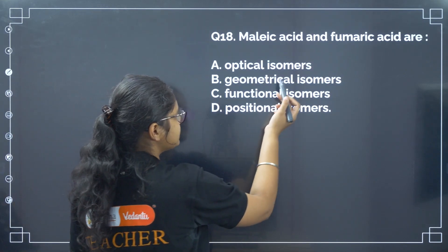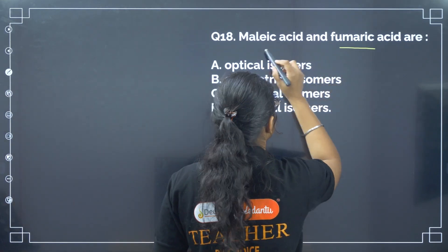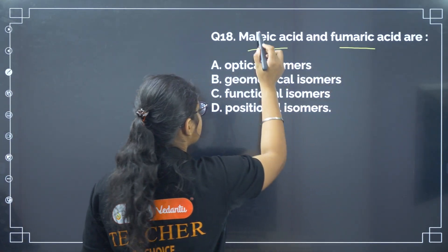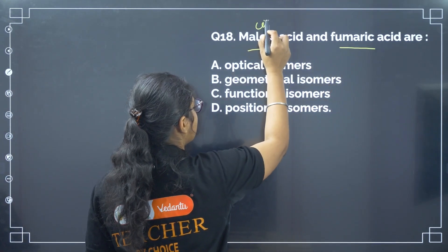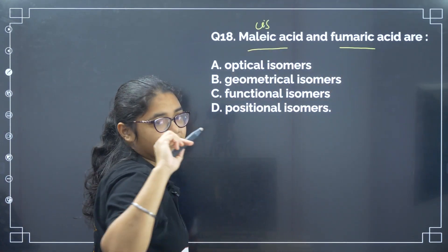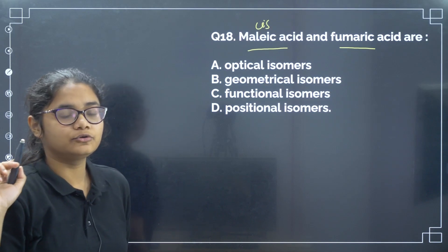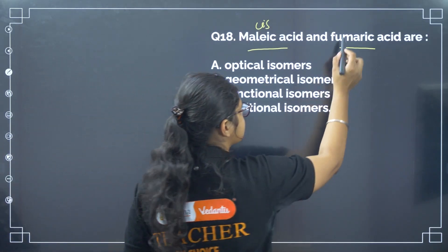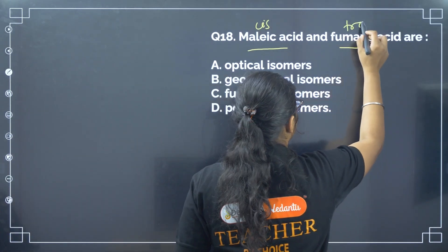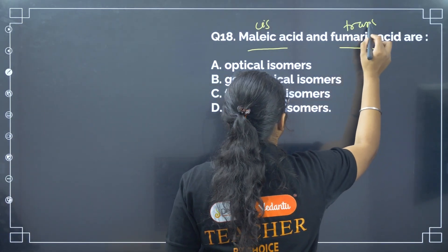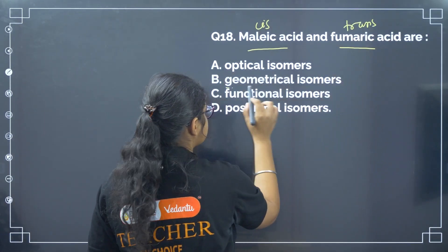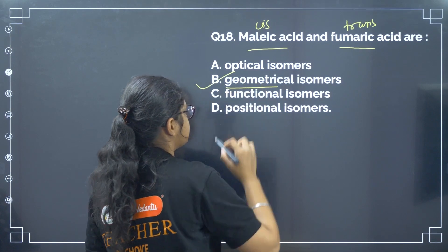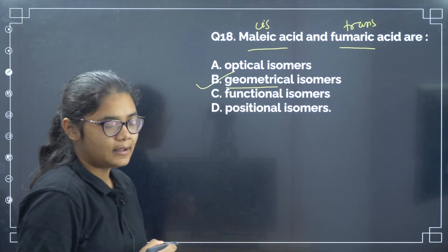Next: maleic acid and fumaric acid. Maleic acid is the cis form of butane-2,4-dioic acid and fumaric acid is the trans form. So these are geometrical isomers. Correct answer is option number B.